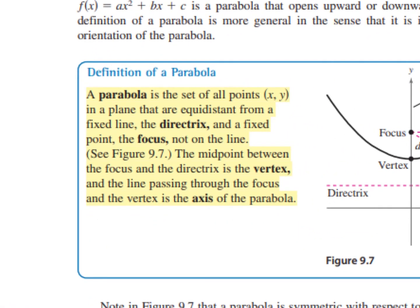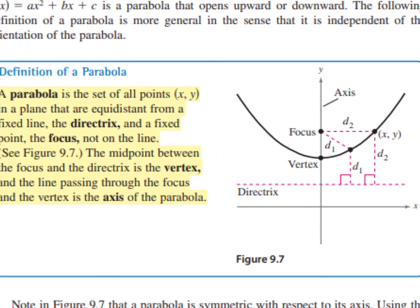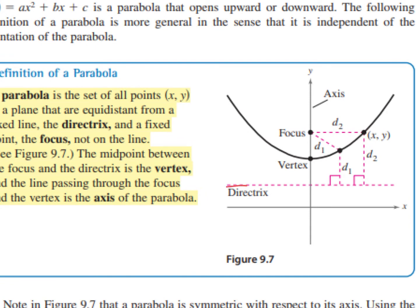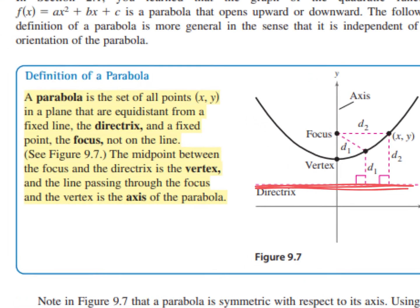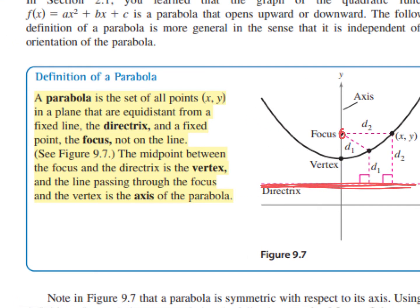A parabola is the set of all points (x, y) in a plane that are equidistant from a fixed line, which is the directrix, and a fixed point, the focus — not on the line. The midpoint between the focus and the directrix is the vertex. From the focus to the vertex is the same length as from the vertex to the directrix, so that will be important in some of our examples.